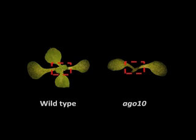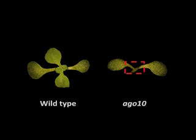In Arabidopsis, AGO10 mutants display differentiated organs or empty apexes in place of the shoot apical meristem. In other words, AGO10 mutants cannot maintain the shoot apical meristem in their seedlings. AGO10 protein is a central component of the RNA-induced silencing complex; it recruits small RNAs to repress expression of microRNA targets.